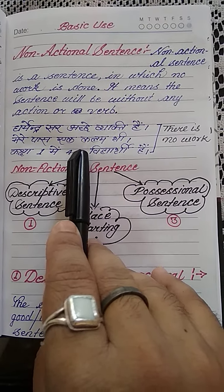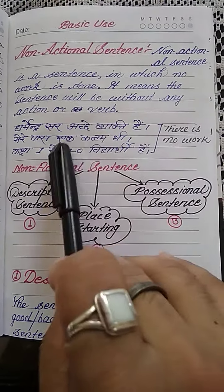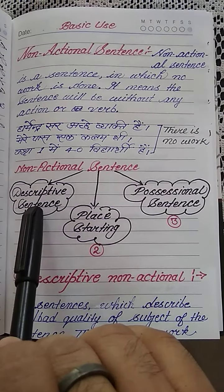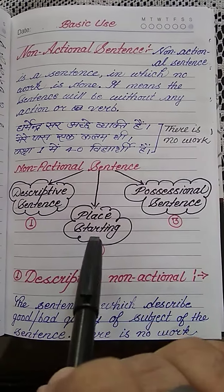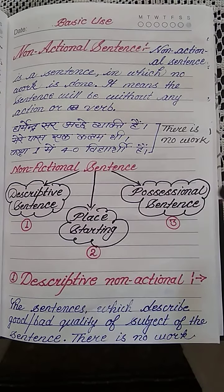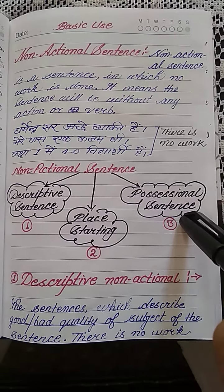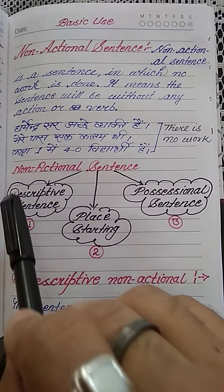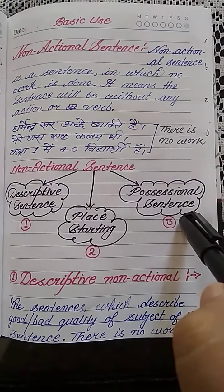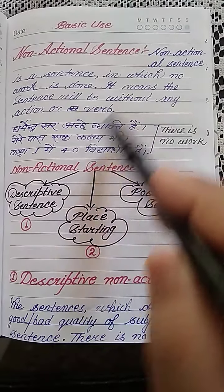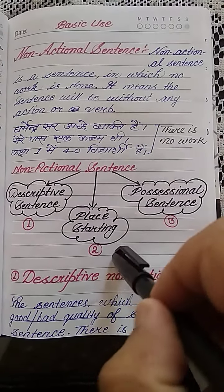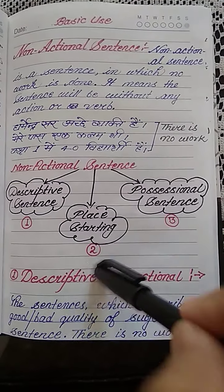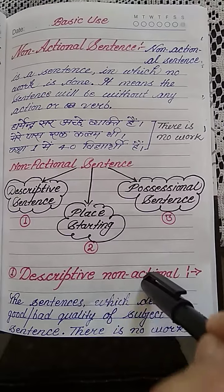Let's talk about how we will compose these kinds of sentences and what kinds there are. Non-action sentences are mostly of three kinds: descriptive sentence, place sentence, and positional sentence. Today we will talk about descriptive sentences. This video series will have two more videos after this — today we will cover only the descriptive sentence.